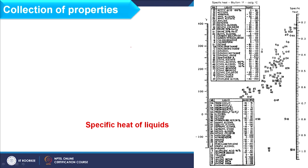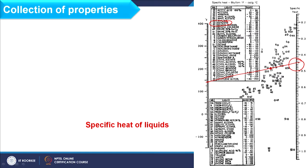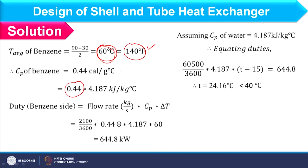At 140°F average temperature, we find the Cp value from property data. For benzene, the compound number is 23. Reading from the graph at 140°F gives a Cp of 0.44 cal/g°C. Once we have this specific heat, we can convert to required units and make the heat balance. With a flow rate of 21,000 kg/hr, the total heat duty comes out as 644.8 kW.